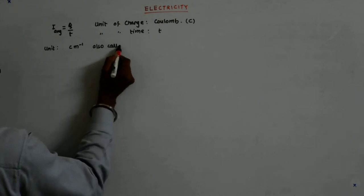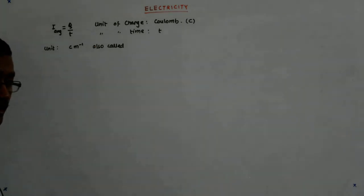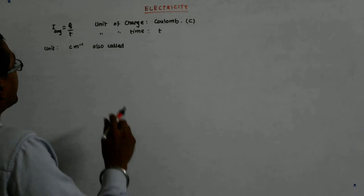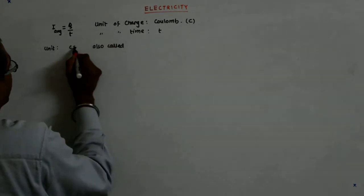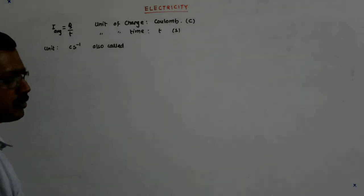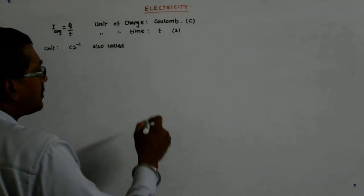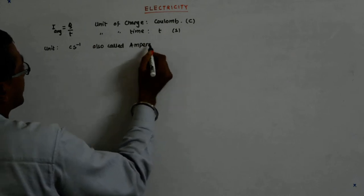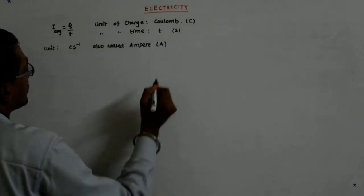Which is also called, what is it called? Coulomb per second, extremely sorry, time unit is second. Coulomb per second is ampere. Ampere is another scientist, so capital A, so unit of current.